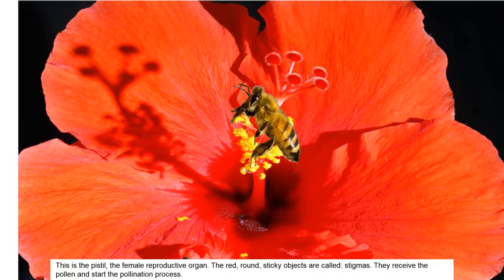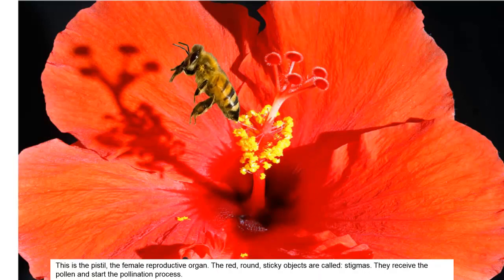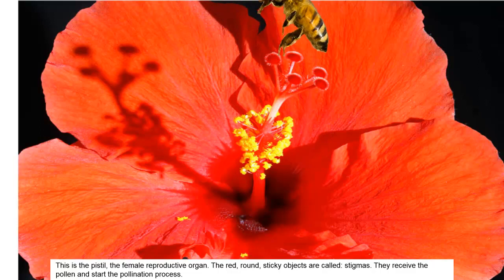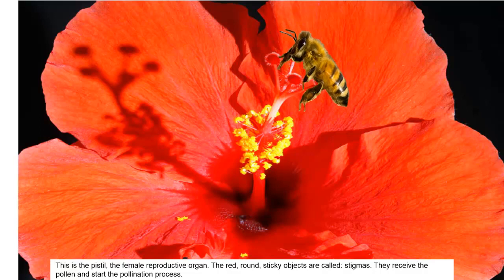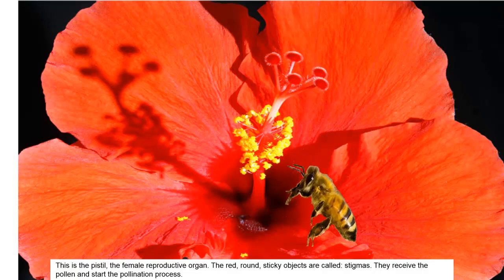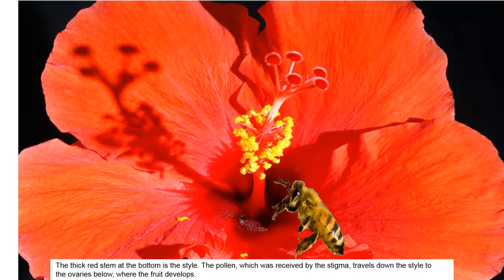This is the pistil, the female reproductive organ. The red, round, sticky objects are called stigmas. They receive the pollen and start the pollination process. The thick red stem at the bottom is the style. The pollen, which was received by the stigma, travels down the style to the ovaries below, where the fruit develops.